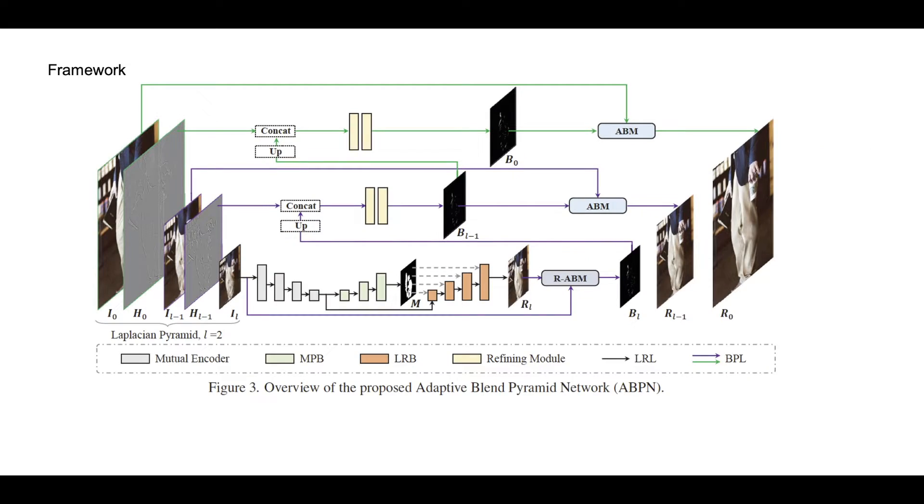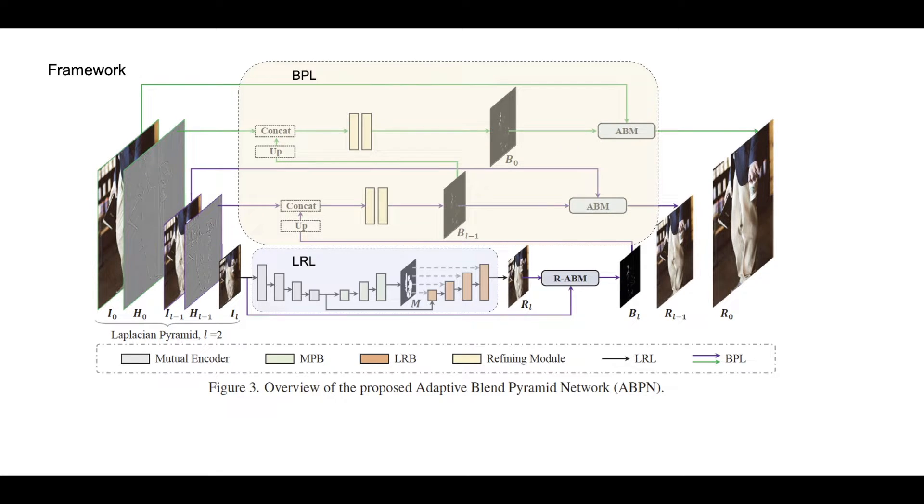This figure shows the overview of the proposed Adaptive Blend Pyramid Network. The network addresses the three challenges aforementioned via two components: a context-aware local retouching layer and an adaptive blend pyramid layer. In general, given a high-resolution image, the LRL performs local retouching on its thumbnail and the subsequent BPL expands the outputs of LRL to the original size of the input.